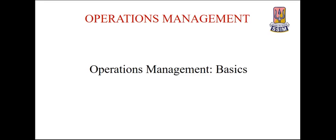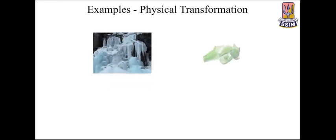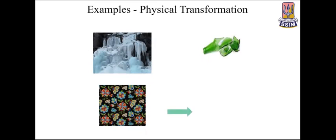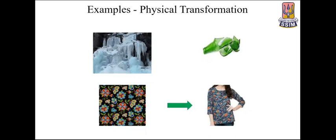For conversion of raw material into the final product, we use a transformation process. The transformation process can be physical, chemical, and thermal. For example, in physical transformation — freezing of water, a broken bottle, and fabric which is converted into a garment. In physical transformation, the dimension, geometry, shape, or size of the input is changed, but the chemical composition remains the same.